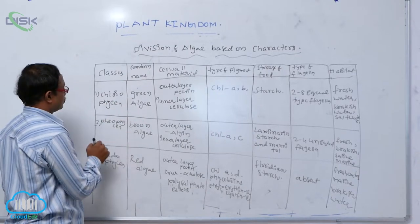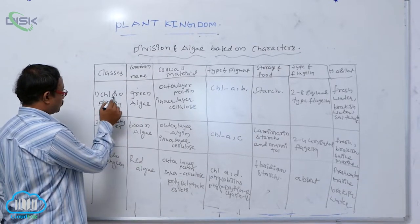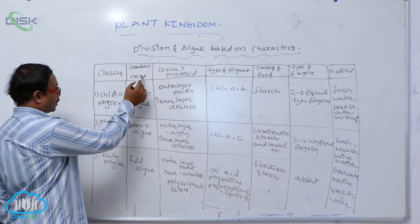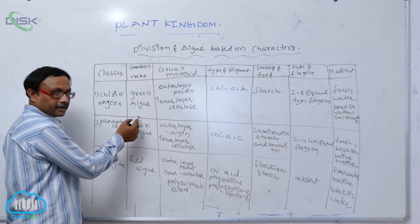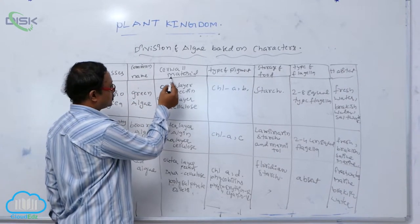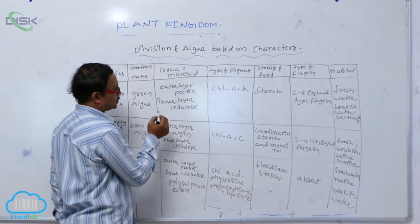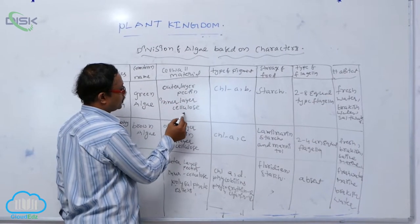First, there are mainly three classes. The first class is Chlorophyceae, commonly known as green algae. In this, the cell wall material has an outer layer of pectin and an inner layer of cellulose.